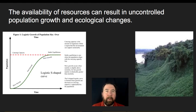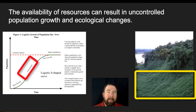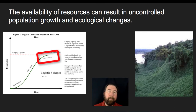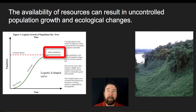The availability of resources can result in uncontrolled population growth and ecological changes. When something like kudzu is introduced, it first undergoes some slow growth, but if environmental conditions are correct, it can then undergo very fast growth. If this fast growth is not checked by herbivores or predators, it will rapidly expand and choke out or out-compete native species. Eventually some resource becomes limiting — in kudzu's case, physically available land — and it will start to slow and reach its carrying capacity, but by then it may have reached a very high carrying capacity and out-competed other species.